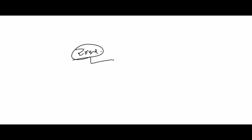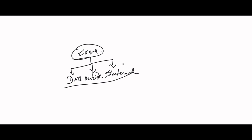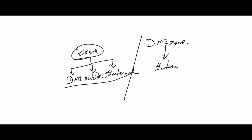Before starting with the infrastructure, we need to understand zones. How many zones are there? There are a few types: internal zone, DMZ, and outside. These are the three zones we see in infrastructure.